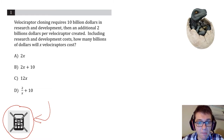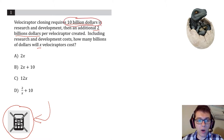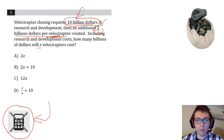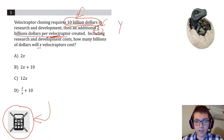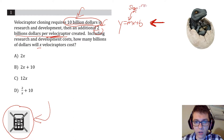Problem one: velociraptor cloning requires ten billion dollars in research and development, then an additional two billion dollars per velociraptor created. Including research and development costs, how many billions of dollars will X velociraptors cost? This is a very common type of problem on the SAT where they give you some initial condition and a rise per unit. When they give you an initial condition and a rise per unit, they want you to think about a line in slope-intercept form: y = mx + b. M represents the slope or rise over run, and b is the intercept or initial condition.